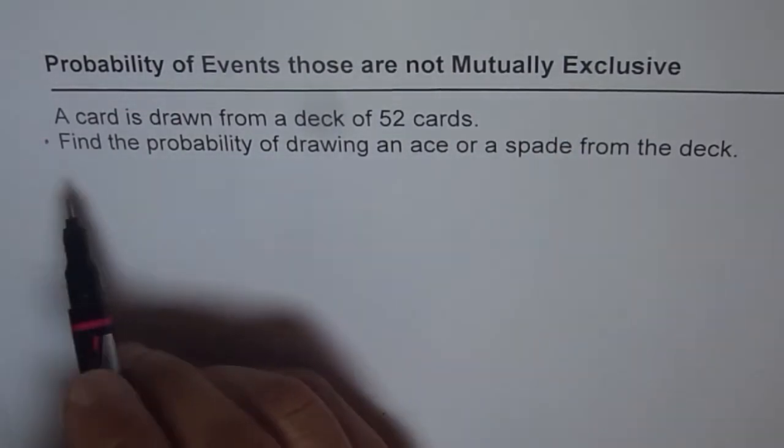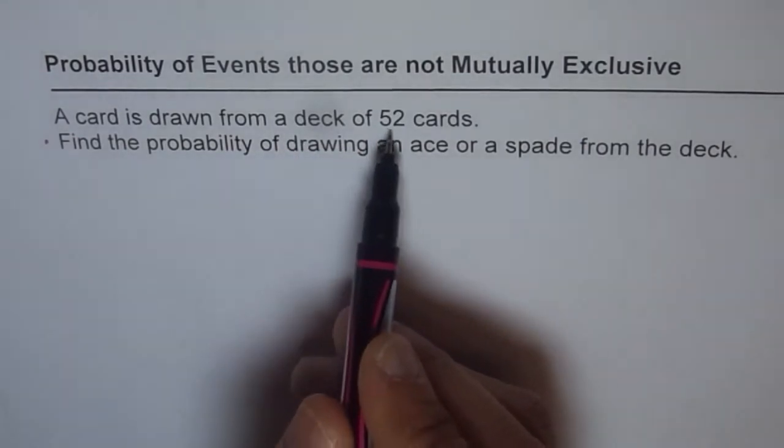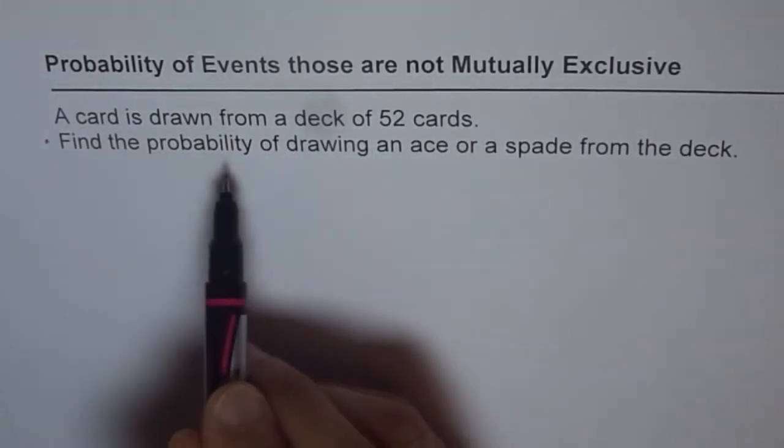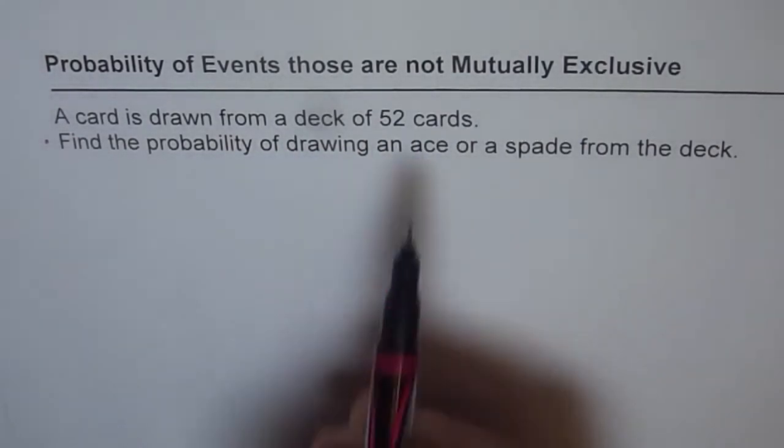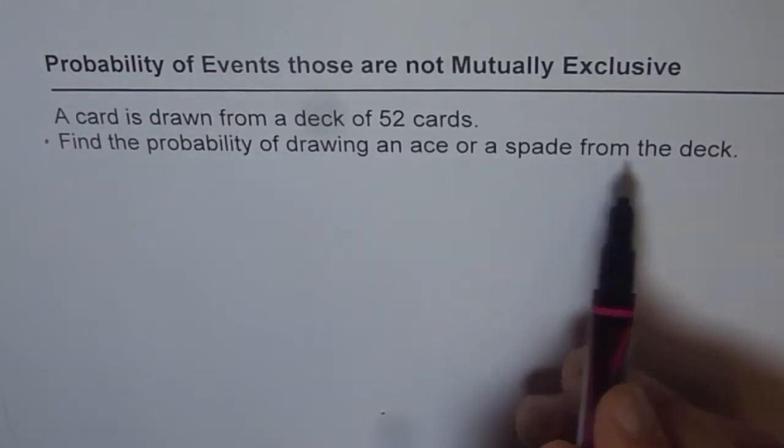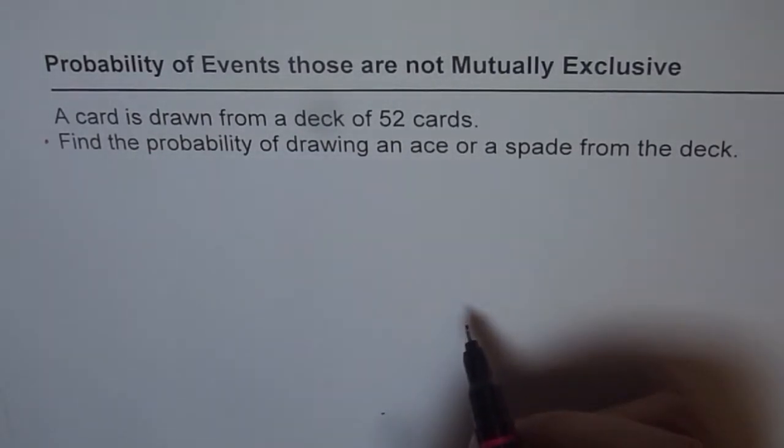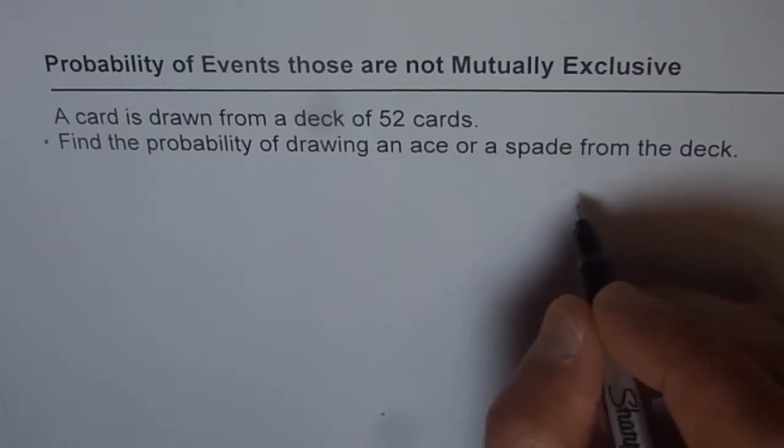The question here is, a card is drawn from a deck of 52 cards. Find the probability of drawing an ace or a spade from the deck. Now, how is this event not mutually exclusive? Can you answer that? Well let's look into it.